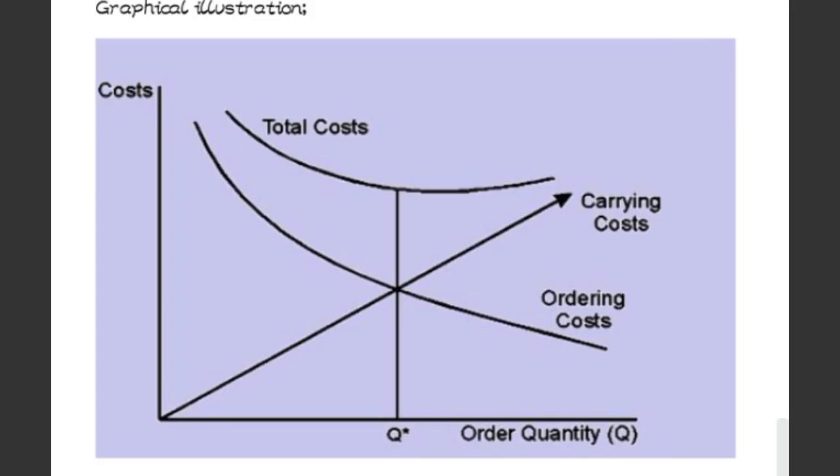This graph shows the economic order quantity. The x-axis shows the order quantity (Q) and the y-axis shows the costs. The straight line shows the carrying costs, while the curve line shows the ordering costs. At the point where the carrying costs meet the ordering costs, that is the economic order quantity. The other curve represents total costs.